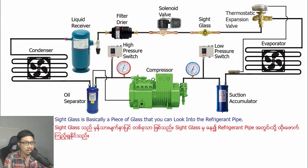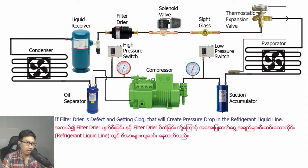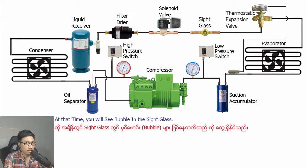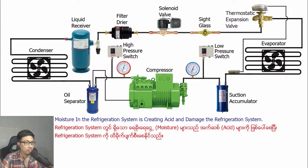The sight glass is physically a piece of glass that you can look into the refrigeration pipe. Refrigerant liquid flows from the condenser outlet to the evaporator inlet. If the filter dryer is defective and gets clogged, that will create pressure drops in the refrigerant liquid line, and you will see vapor in the sight glass. The vapor in the sight glass indicates moisture in the refrigeration system, which can create acid and damage the refrigeration system.